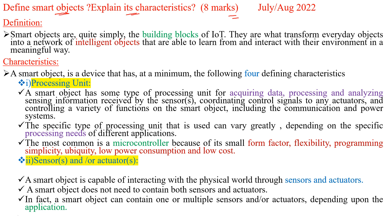A smart object is an object that can sense and communicate with other objects, people, and systems. For the definition, which is worth one mark: smart objects are quite simply the building blocks of IoT. They are what transform everyday objects into a network of intelligent objects that are able to learn from and interact with their environment in a meaningful way.